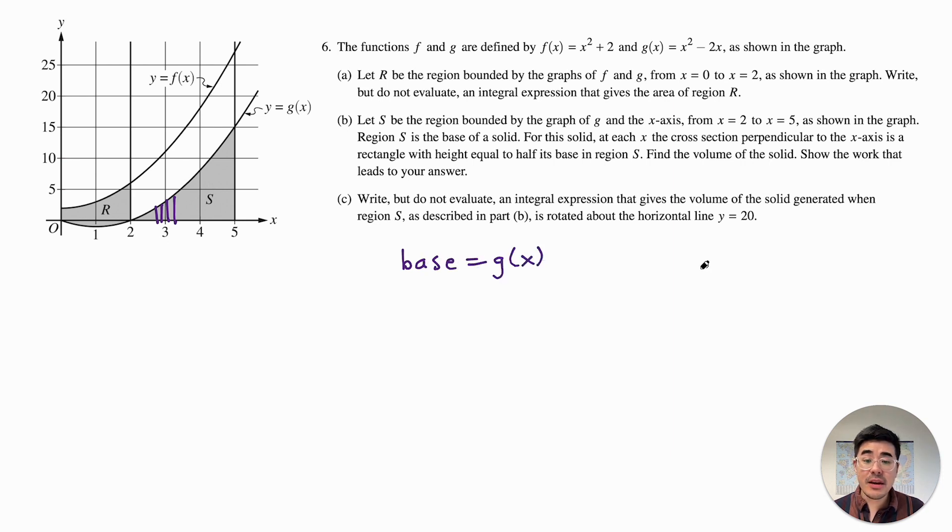So then the base of our solid is basically going to be g of x. Now if we want to calculate the area of our solid, the area of the solid is just going to be our base times the height. But what does it say about the height? The height is equal to half the base. So it would be base times another one half of the base. So our area formula in terms of x is just going to be one half times g of x squared. Now to find the volume then, we're going to integrate. Again, since it's vertical slices, it'll be from left to right of the area formula. I'm just going to put the one half out in front because it's a coefficient. And then I'm just going to plug in g of x squared dx.